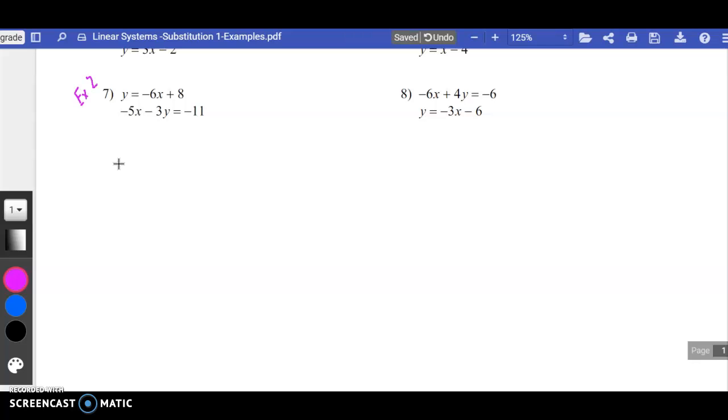And if you look, we have y equals negative 6x plus 8, and the second equation is negative 5x minus 3y equals negative 11.